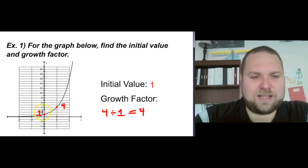And again, all I'm doing is taking the y-value of my second one, or my second point on this line, 4, divided by the y-value of my first point on this line. And those points have to be separated by only one number on the x-axis.